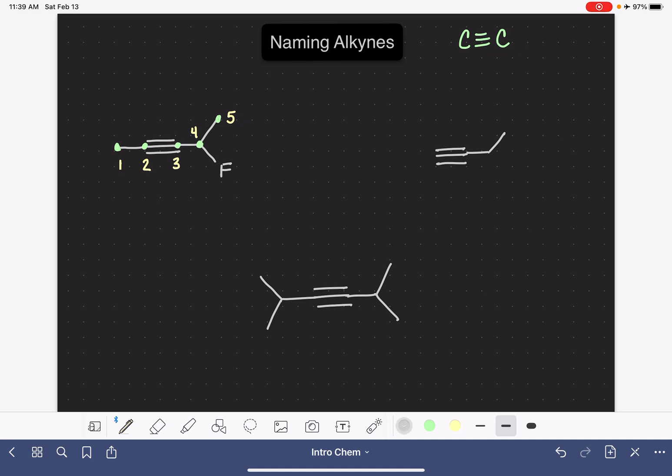We are going to start the name by locating and naming the substituents or the branches or the halogens that are on the carbon chain. In this situation we have a fluorine on carbon number four, so it's four-fluoro. And then we'll say the location of the triple bond using the lowest numbered carbon as the location: two versus three. The lower number is two.